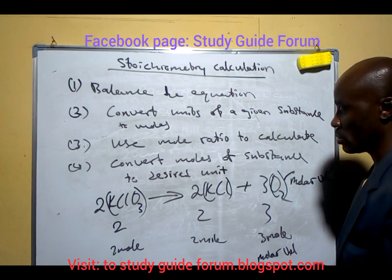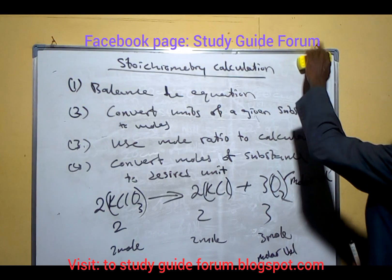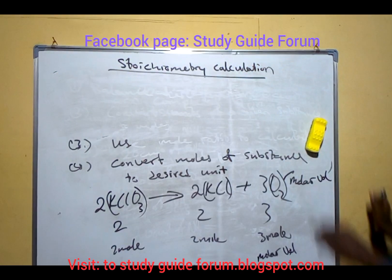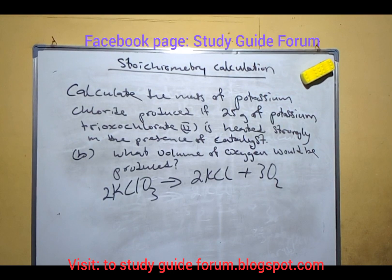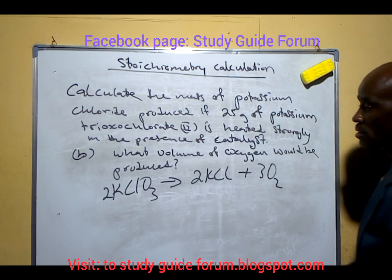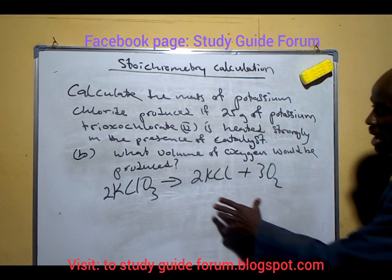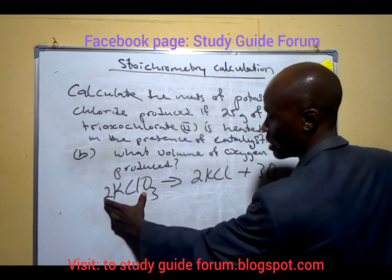Now let's look at a question to help us appreciate what we've covered. The question says: calculate the mass of potassium chloride produced if 25 grams of potassium trioxochlorate(V) is heated in the presence of a catalyst. The equation also asks: calculate what volume of oxygen will be produced. The chemical equation is already balanced, so it gives us all the information we need to solve this problem.